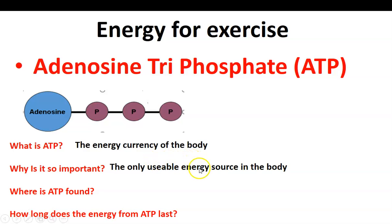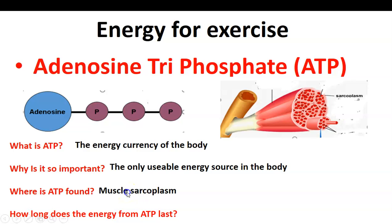In terms of where ATP is found, you might have picked up on me talking about muscles. In terms of where it is specifically found, ATP is found in the muscle sarcoplasm, as you can see here in this cross-sectional view of a muscle. That is where it is located — in the muscle sarcoplasm.